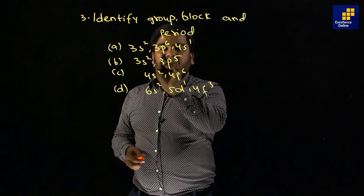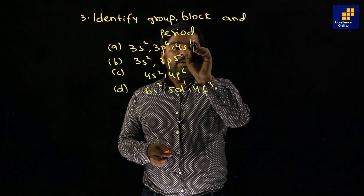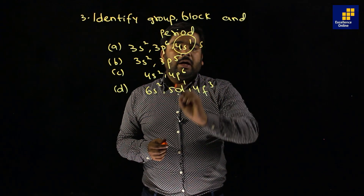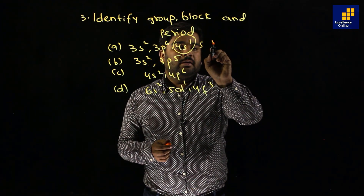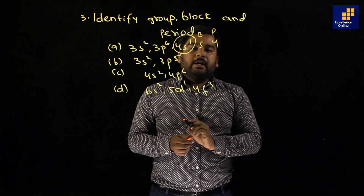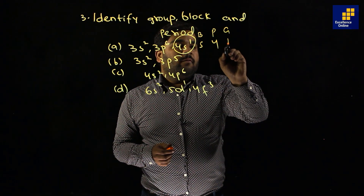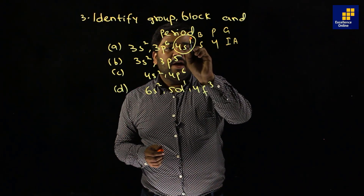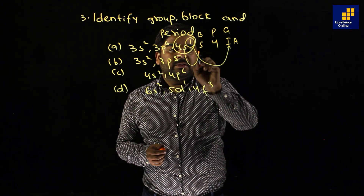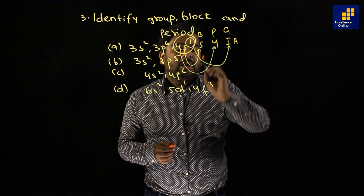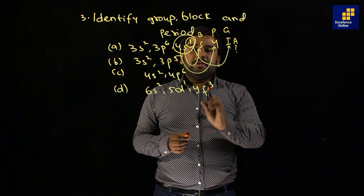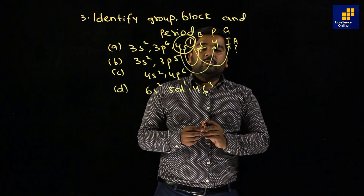3p6 4s1. Here we go — block, group, and period. This block is S, period 4. This group is 1A. Here we go, mark 1. This is S and this is 4. This is A. When S and P block fill, then group A.